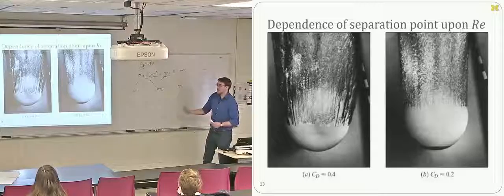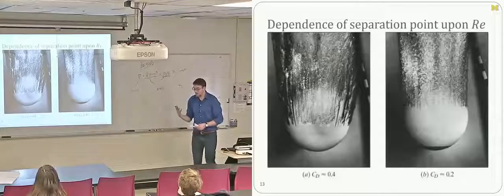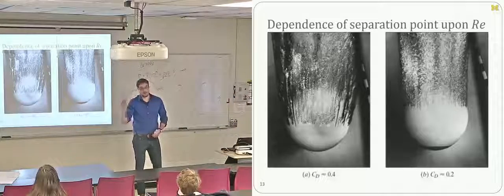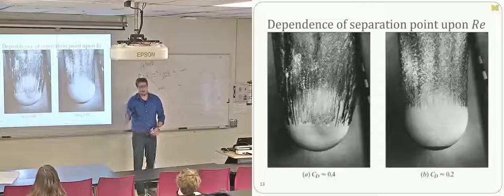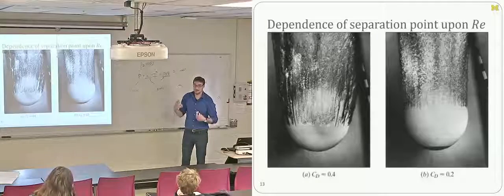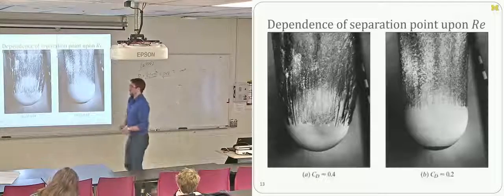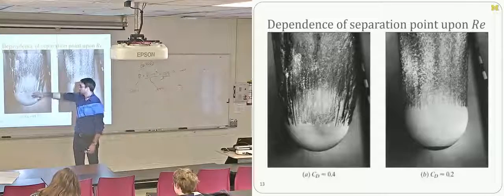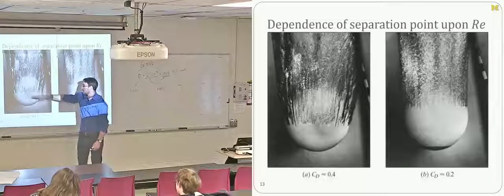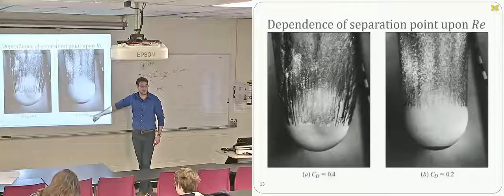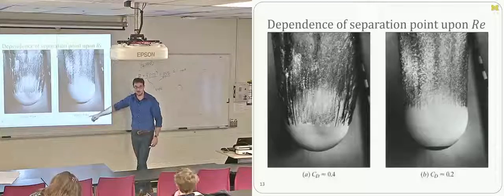Photos from the MIT fluid motion gallery show flow over a bowling ball in laminar and turbulent conditions, clearly demonstrating how much more of the body the flow stays attached over in turbulent flow, enabling pressure recovery. This is exactly why golf balls have dimples: the dimples promote turbulence, shifting the separation point downstream, reducing the drag coefficient and making the ball travel further.